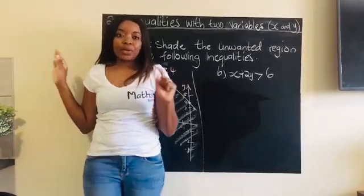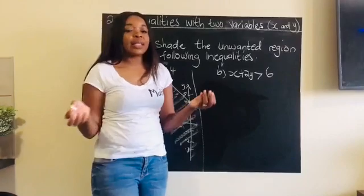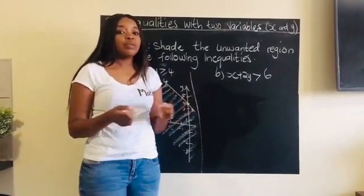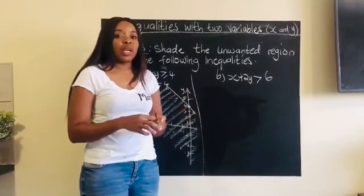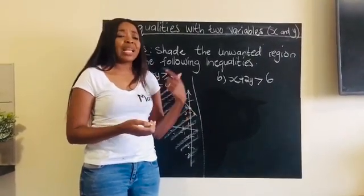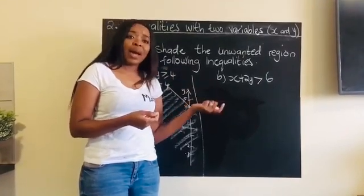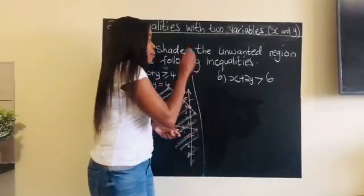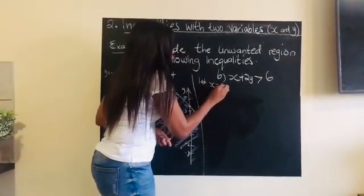In part b, they say x plus two y is greater than six. We want to apply the same methodology — find our x and y intercepts. The easier way is to let x be zero to get the y-intercept, and let y be zero to get the x-intercept.